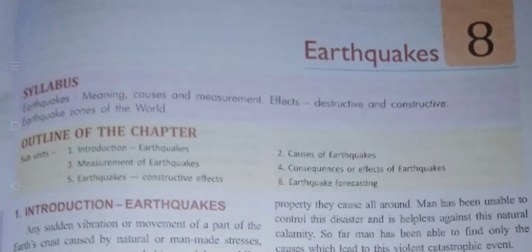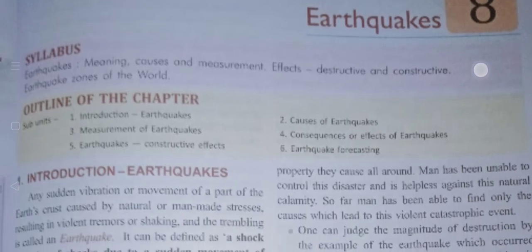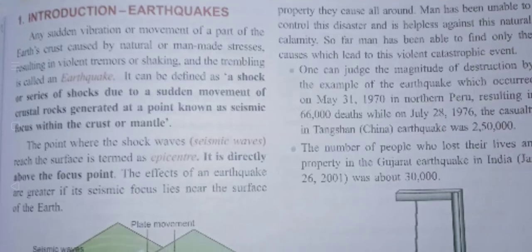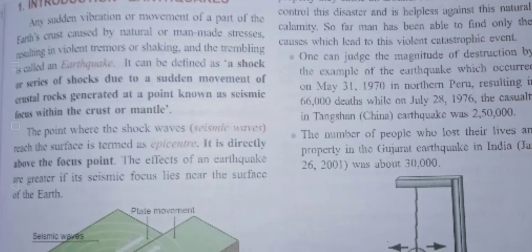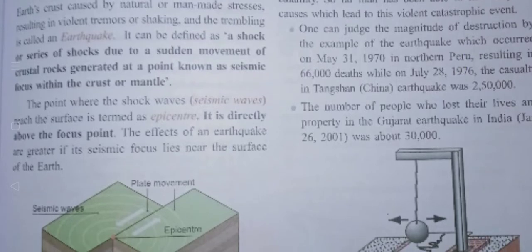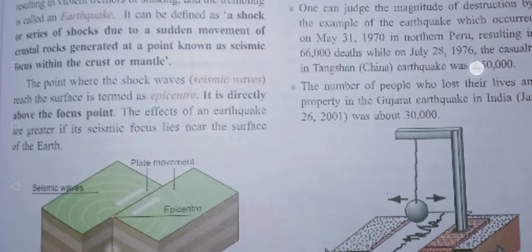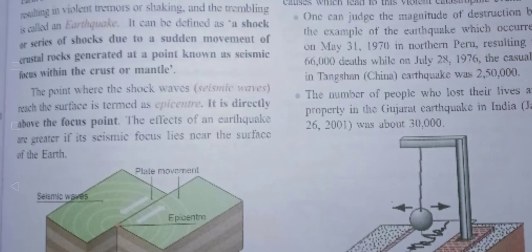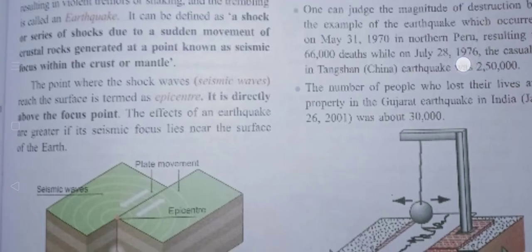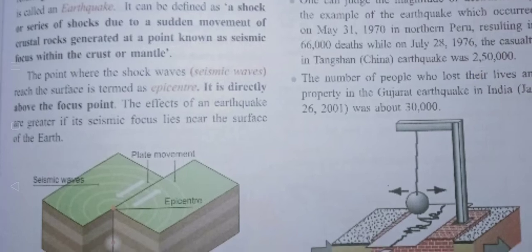In this module we are going to learn about earthquakes — what is an earthquake and measurement of earthquakes. Earthquakes are a sudden vibration or movement of part of the earth's crust, caused by both natural and man-made factors, resulting in tremors, meaning shaking of the earth's crust. An earthquake can also be defined as a shock or a series of shocks due to the sudden movement of the crustal rocks — rocks found in the earth's crust.